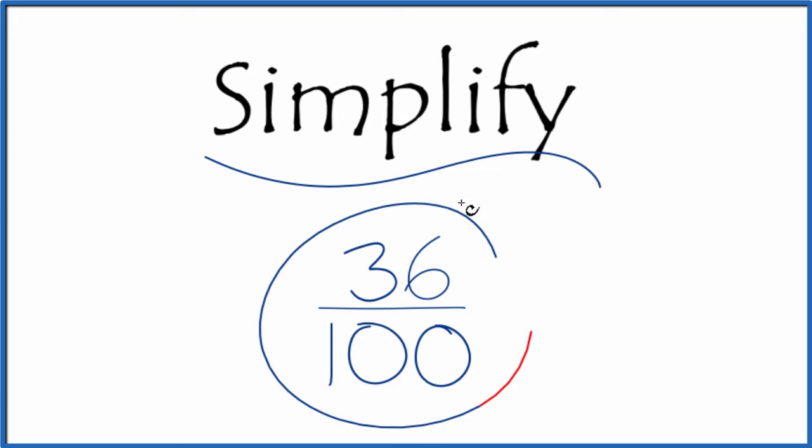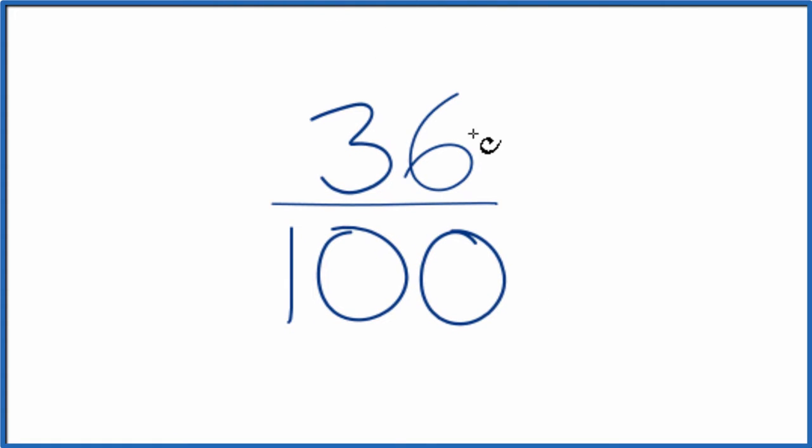Let's simplify the fraction 36/100. What we want to do is find another fraction that's equivalent and has the same value as 36 over 100, just that we've reduced it to lowest terms.